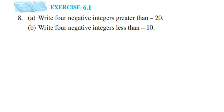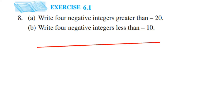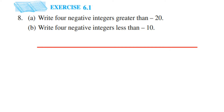Hey everyone, here I am doing exercise 6.1 — this is from the integer chapter of class 6, question 8. The question asks: write four negative integers greater than minus 20, and the second part: write negative integers less than minus 10. Before we solve this, let me draw a number line — though it's not necessary, you can write the answer directly; this is just for explanation.